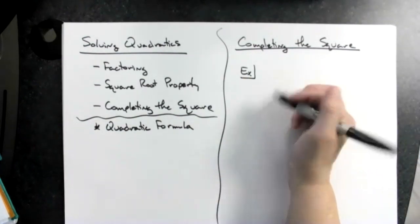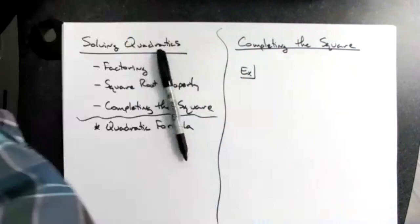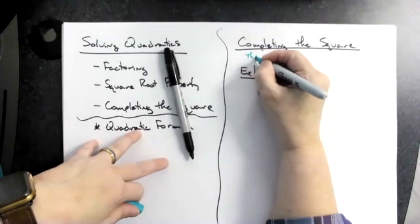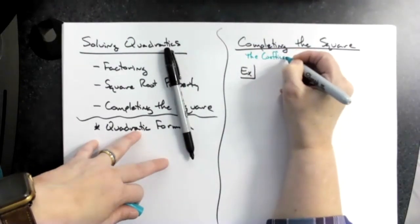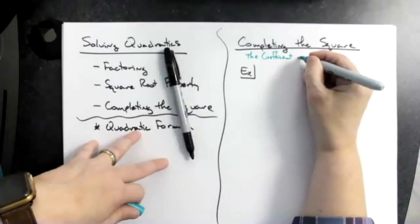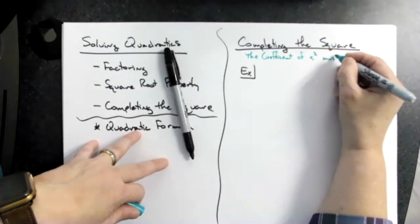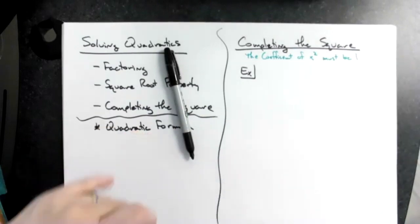Okay, and let's actually add a note here on this. Let's put: the coefficient of x squared must be one.